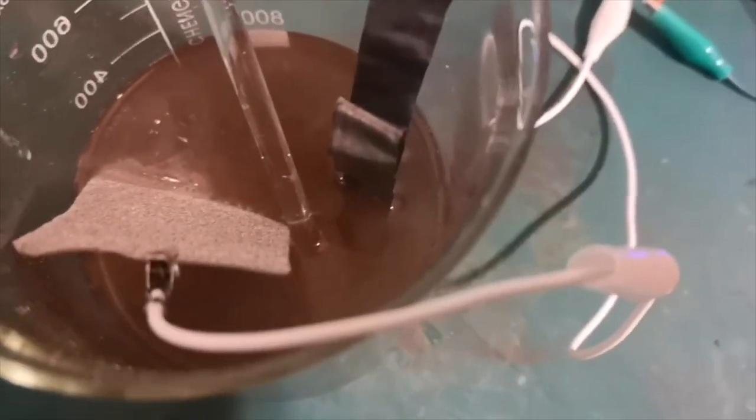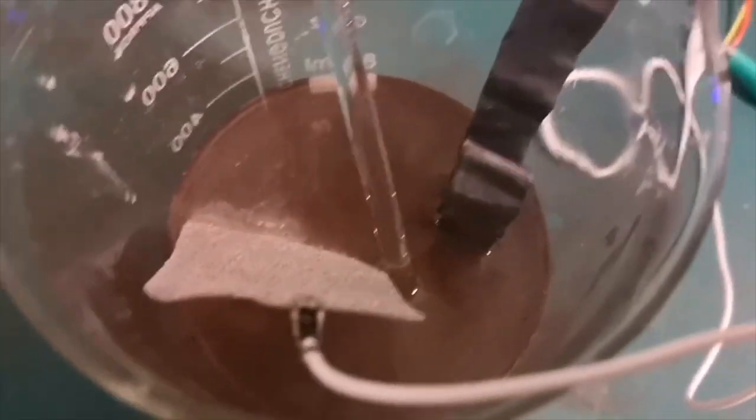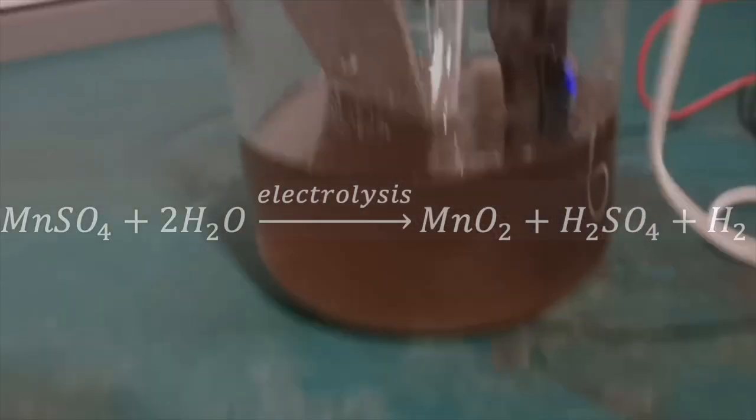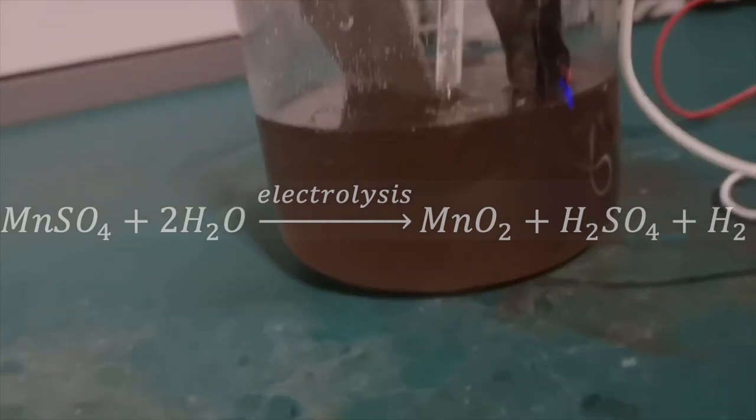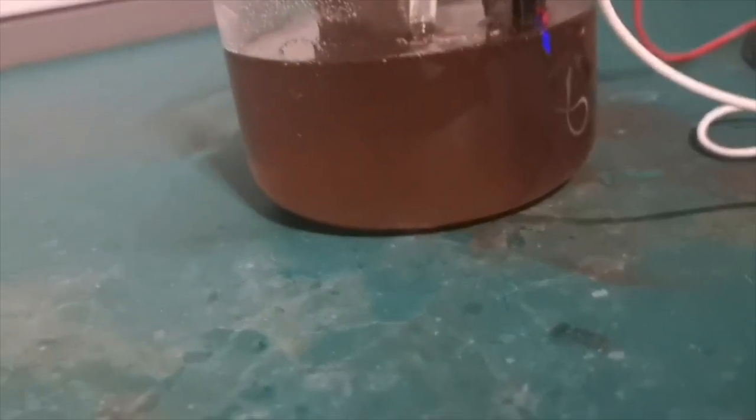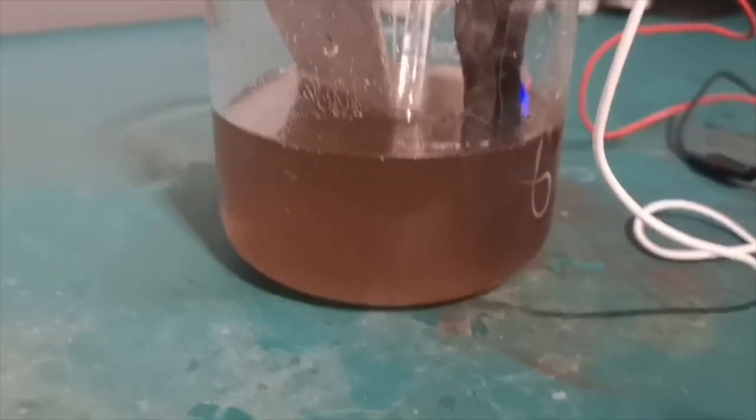A lot of black substance is produced at the anode, and that is manganese dioxide. The manganese sulfate reacts with water to form sulfuric acid, manganese dioxide, and hydrogen. Our reaction produces manganese dioxide, which is a useful reagent, and I will use it to make potassium permanganate later.